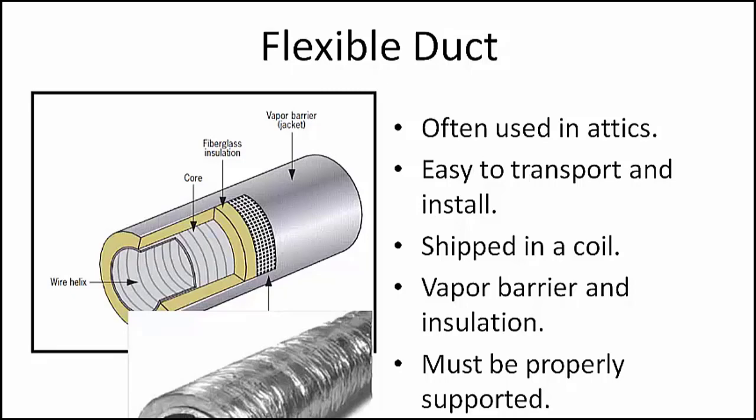Flex duct typically is shipped in a coil of 25 feet to the box. It consists of a metal coil and insulation, often with a vinyl or foil outer coating as shown in this slide. Flex duct must always be stretched tight and supported properly to ensure proper airflow through the duct. Excessively long or sagging runs of flex duct will restrict the airflow and create problems in the system and in the conditioned space.